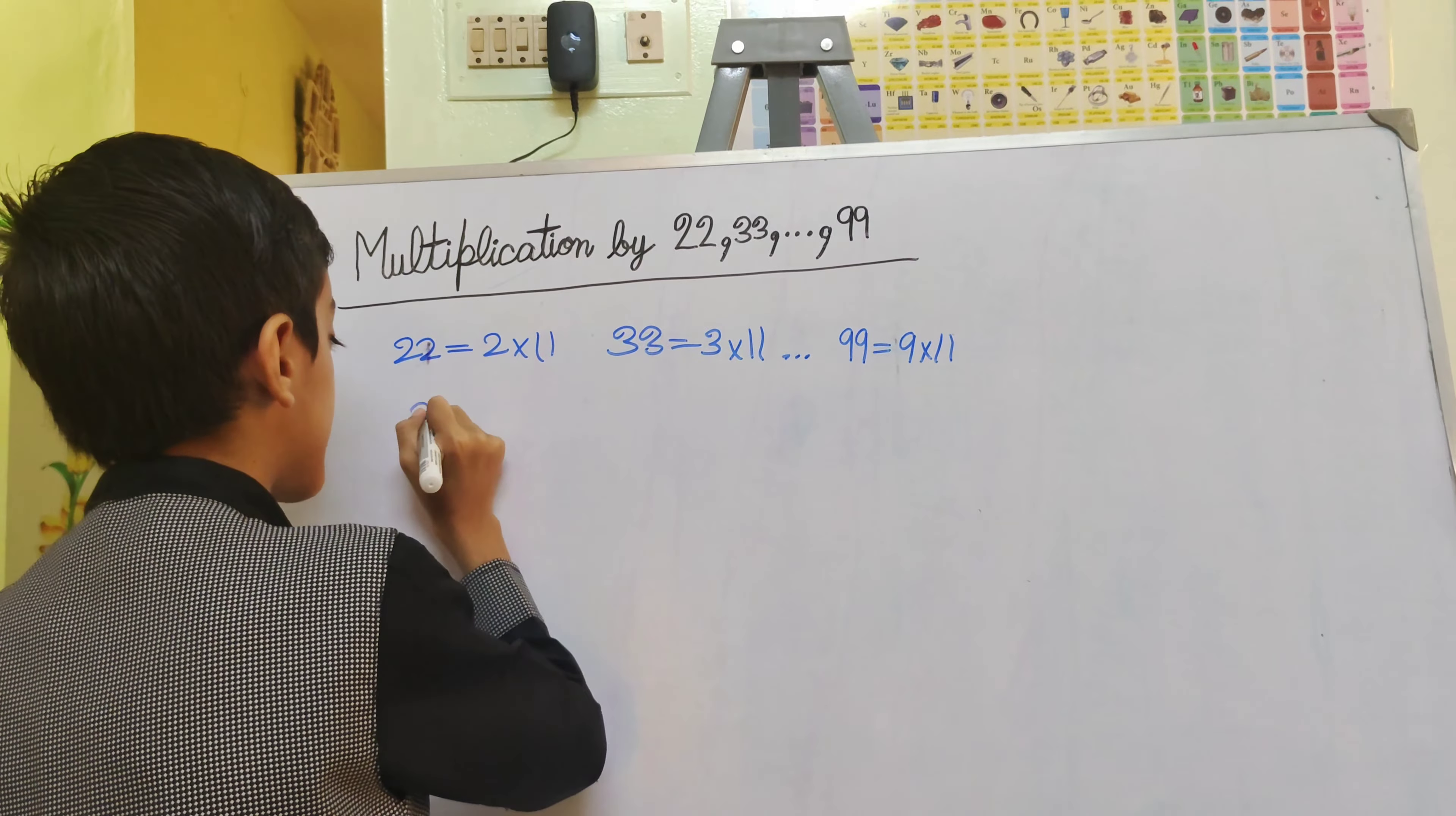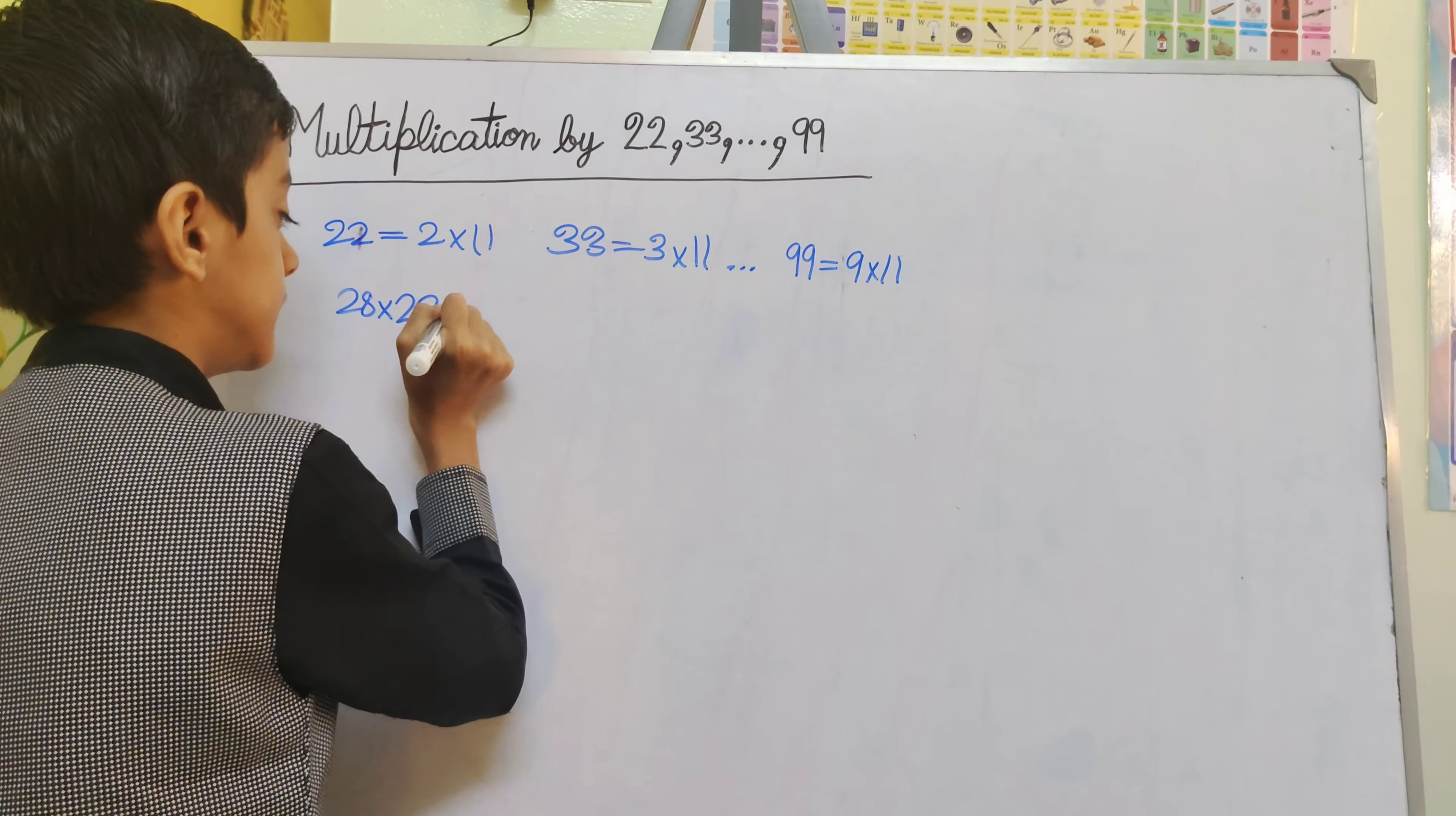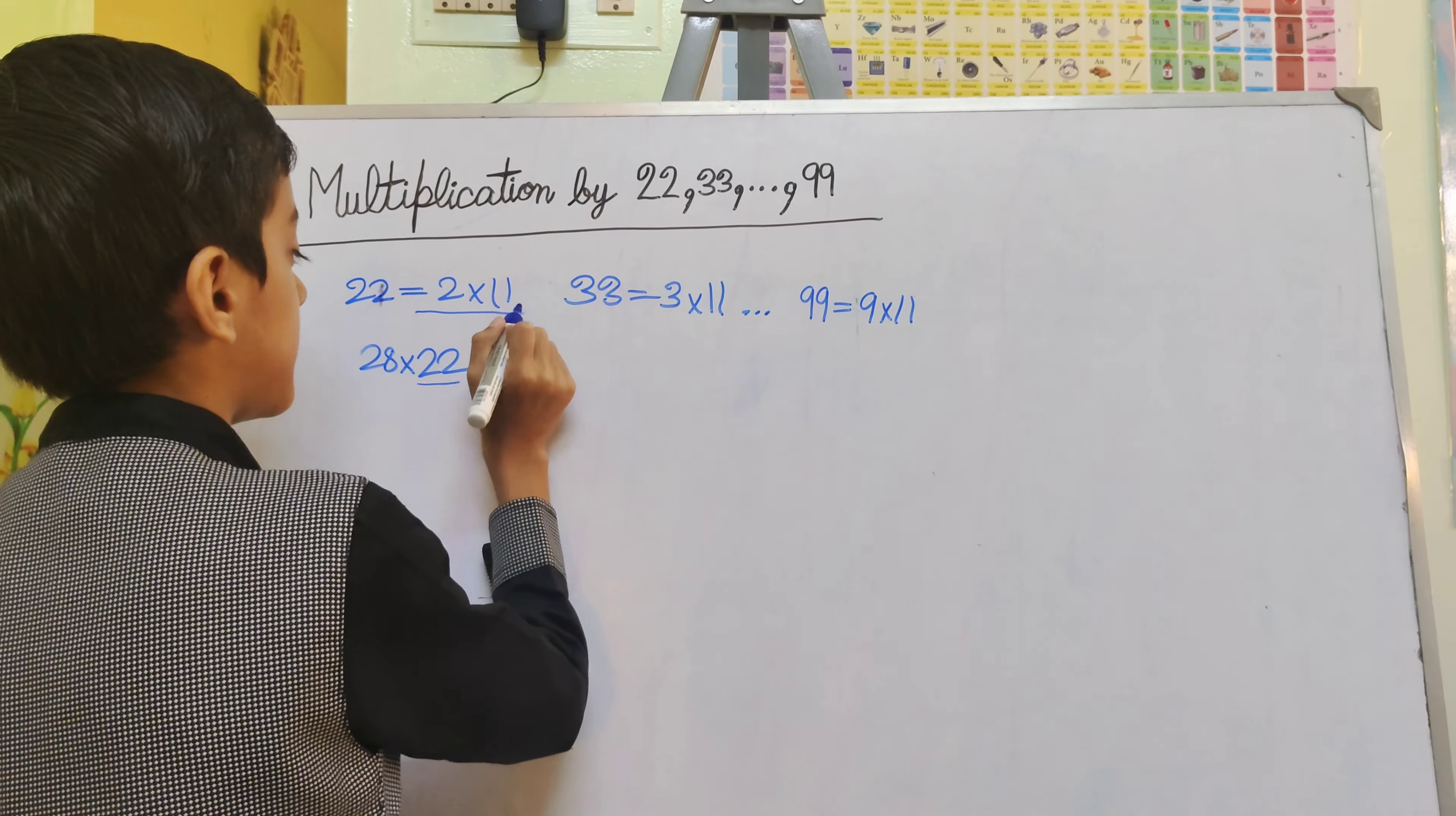Let's take an example of 28 multiply 22. As we can write 22 as 2 multiply 11.